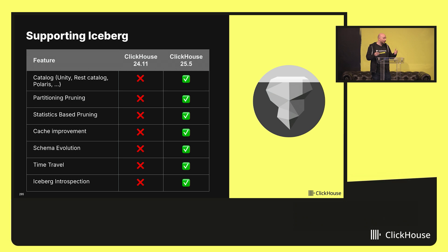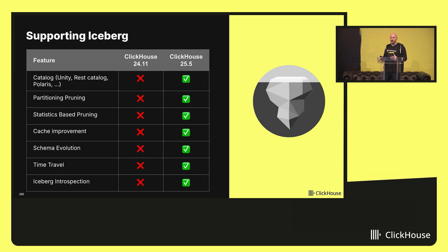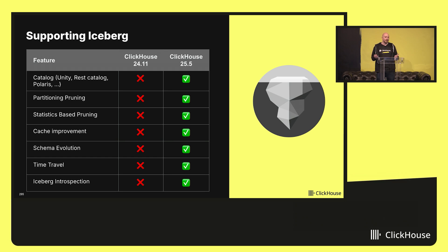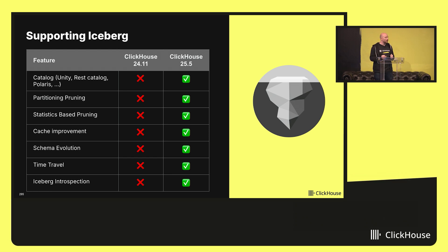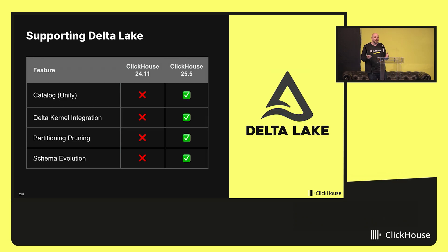A bulk of the work was also to make sure that ClickHouse was compatible with the Iceberg specification. This is where we spent a lot of time — making sure we support things like schema evolution, time travel in ClickHouse using Iceberg, and developing all the introspection functions you need to work with your Iceberg tables. We did the same work for Delta Lake.